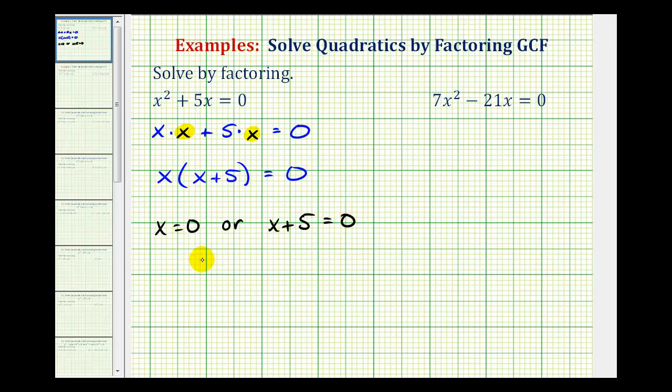So we can see one solution to this equation is going to be x equals zero. And then for the second solution, we need to solve this for x. So we would subtract 5 on both sides of the equation, and this would give us x equals negative 5. These are the solutions to our equation.